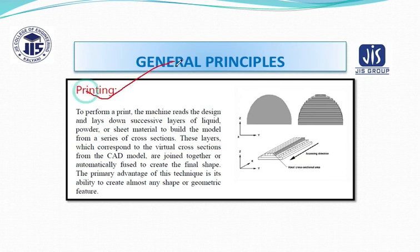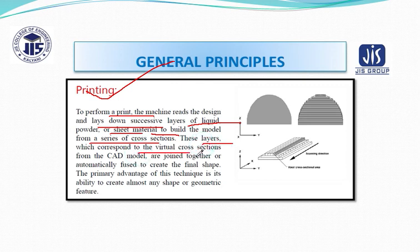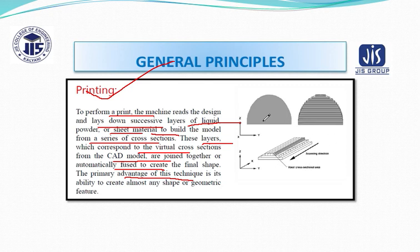For printing, the machine reads the design and lays down successive layers of liquid, powder, or sheet materials to build the model from a series of cross-sections. These layers correspond to virtual cross-sections from the CAD model and are joined or fused together to create the final shape. The primary advantage of this technique is the ability to create almost any shape or geometrical feature. You can see the deposition of material occurring layer after layer.